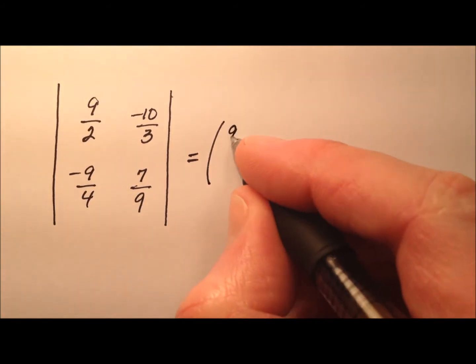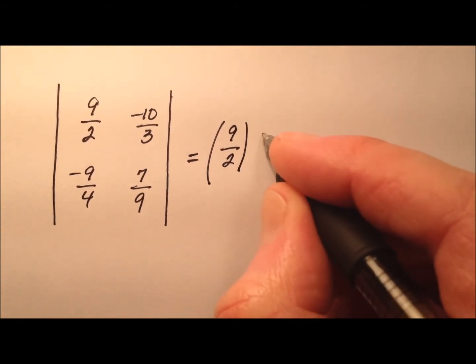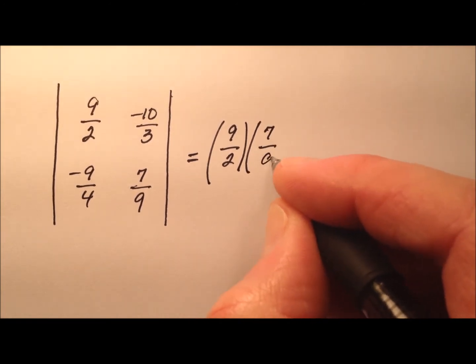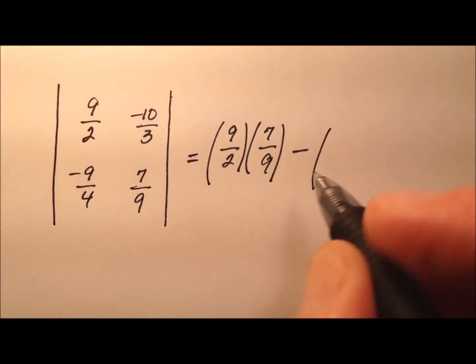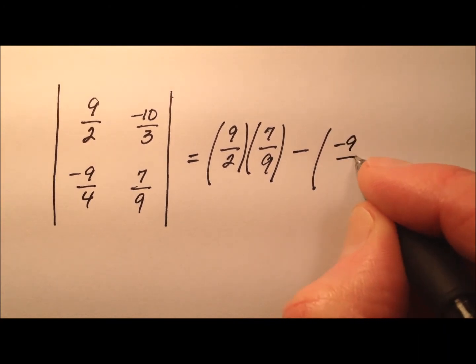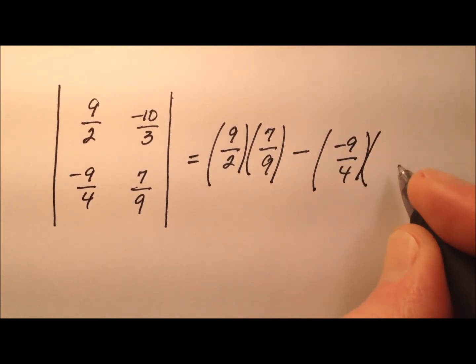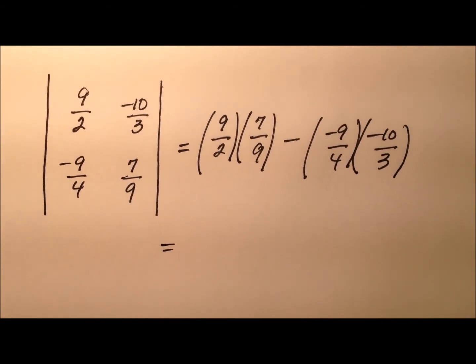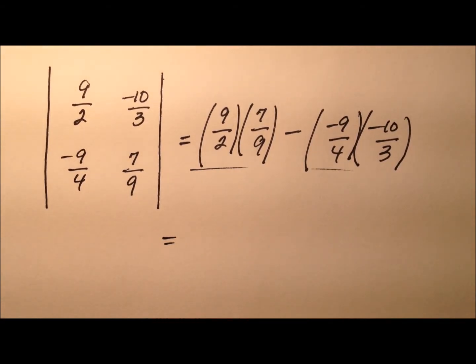So, it'll be 9 halves for that first term times 7 ninths, and from that, we'll subtract these entries in the minor diagonal, negative 9 fourths and negative 10 thirds. Okay, so let's just go ahead and do each of these products and then subtract.